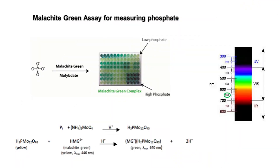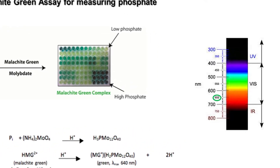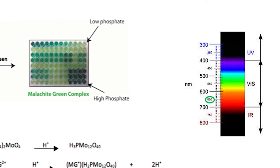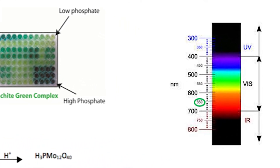Since we know the Malachite Green Complex forms from malachite dye reacting with inorganic phosphate, we will need to account for any that has not yet reacted. To do this, we will instead measure the solutions at a wavelength of 650 nanometers. This higher wavelength will correlate perfectly for how much inorganic phosphate is in our solutions.